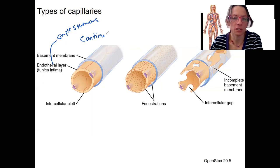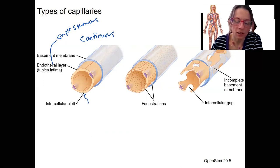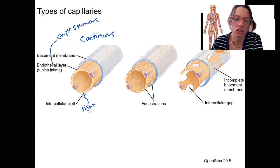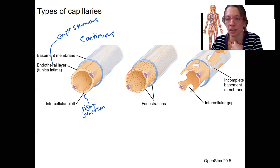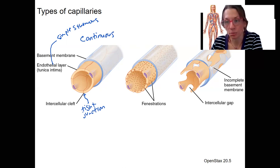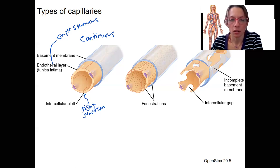The most common type is called continuous. These have really tight junctions between the different cells. There is a small cleft — a gap between them — but there are tight junctions and the cells are close together; they're not gappy. Most of what passes through will go through the cell membrane. Diffusion of small molecules, water, lipid-soluble molecules, and some vesicular transport can occur across these.